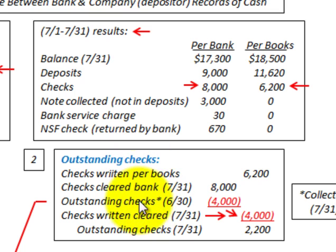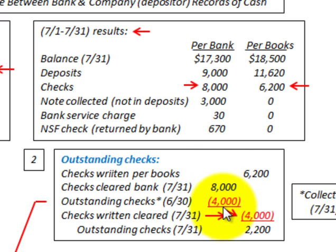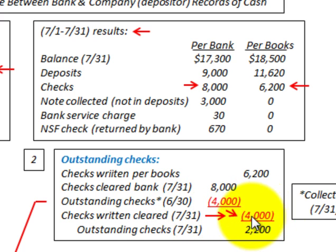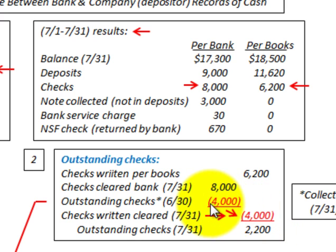Going back to outstanding checks: we assume that for this July period, all those prior month checks have cleared the bank. So we subtract the $4,000 outstanding checks from the previous month (June 30) from checks that cleared the bank at July 31 of $8,000, giving us $4,000 as a positive amount. We subtract that subtotal of $4,000 — the checks written and cleared at July 31 — from the checks written per the books of $6,200. Our outstanding checks for July 31 end of month are $2,200.